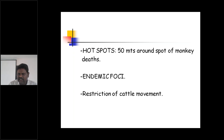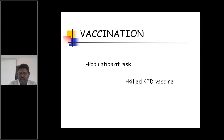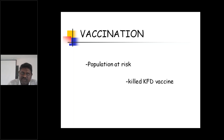In the endemic foci, restriction of cattle movement is enforced. Cattle and human beings are not allowed to enter into those hotspots. Coming to vaccination — the population at risk must be vaccinated. Mainly woodcutters entering the forest and cattle rearing people are at risk.